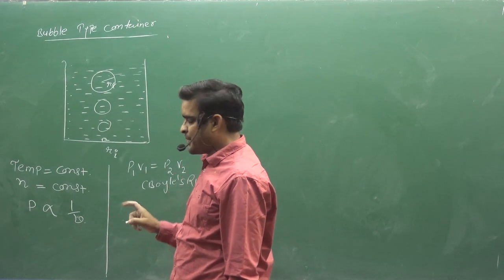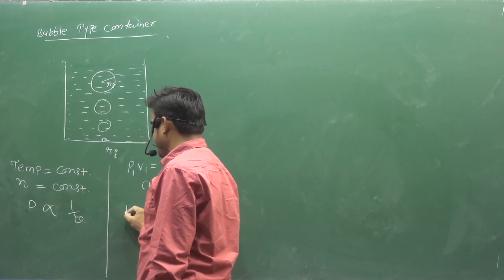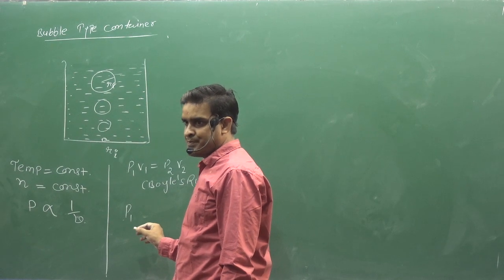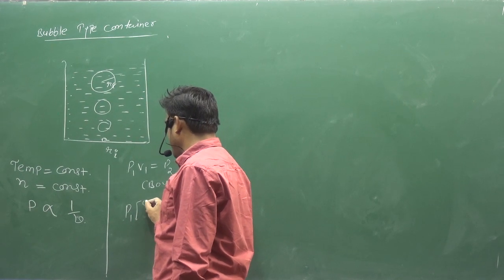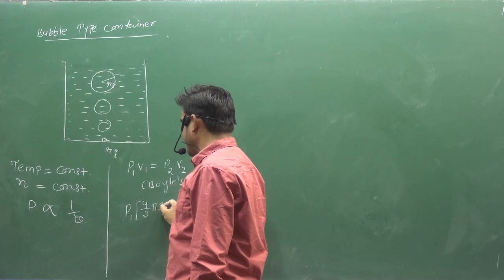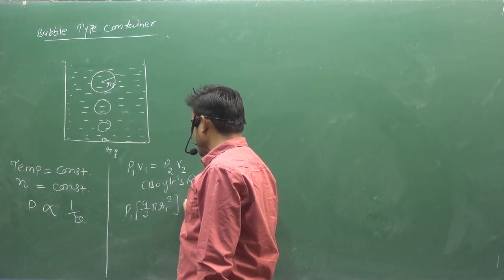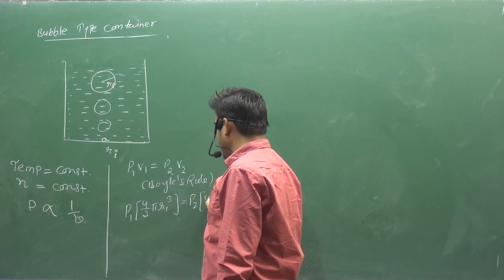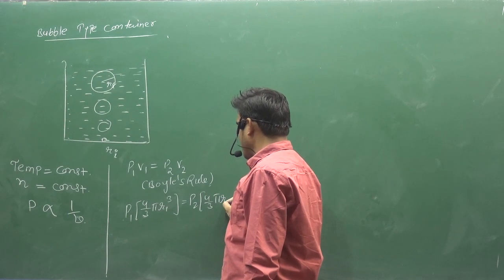What can you write in V1? P1. What is the volume? 4 by 3 R cube? 4 by 3 pi R cube. I write R1 cube. P2, 4 by 3 pi R cube, R2 cube. Say yes.